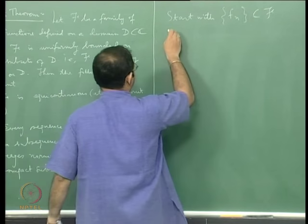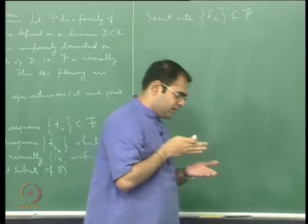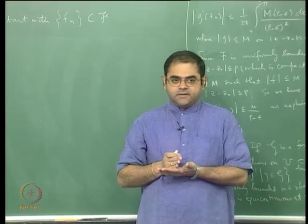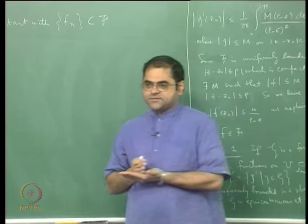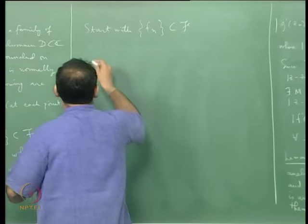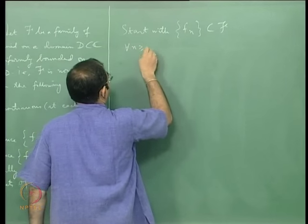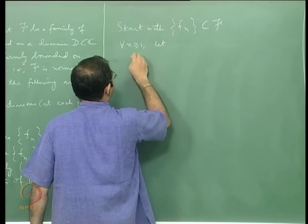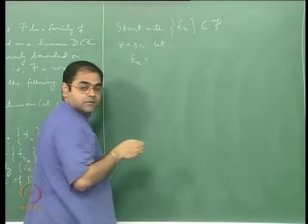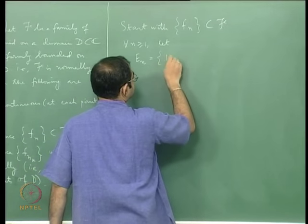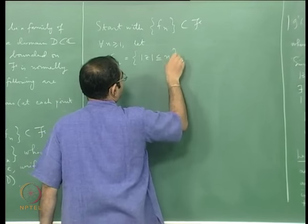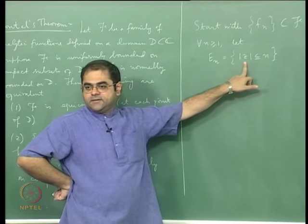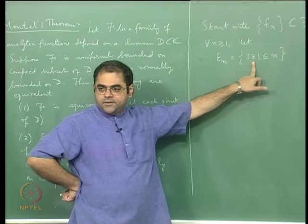This is the trick of chopping up a non-compact set into a union of compact subsets which cover it. For every n ≥ 1, let E_n be the set of z with |z| ≤ n intersected with the domain — so E_n consists of points in D lying inside the closed disc of radius n centered at the origin.